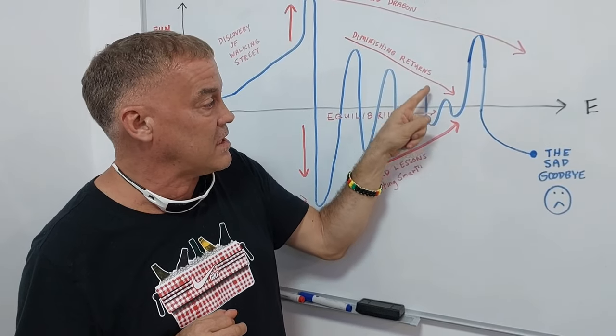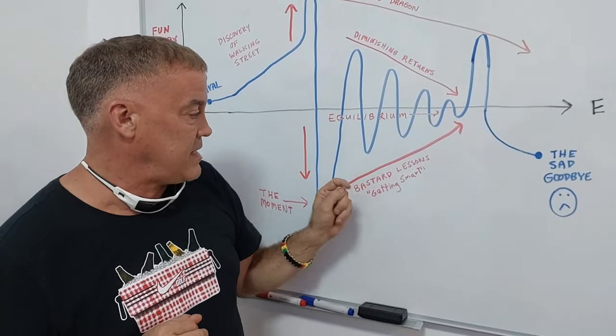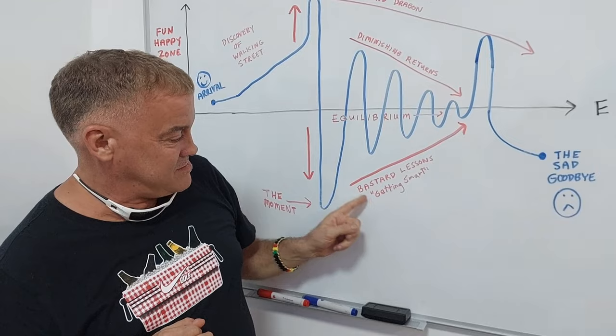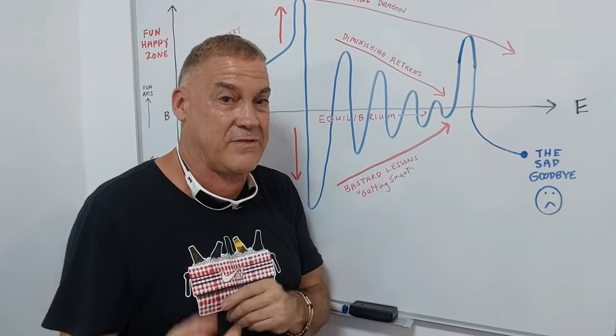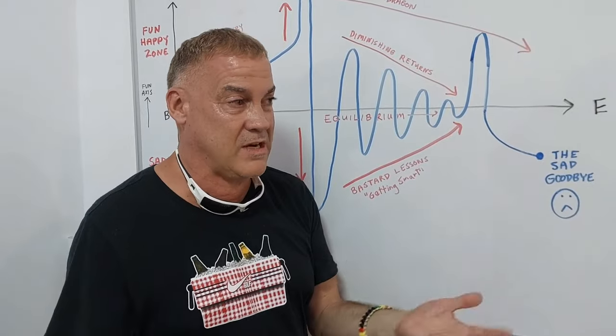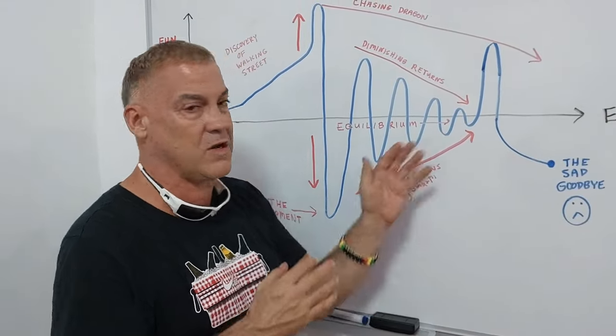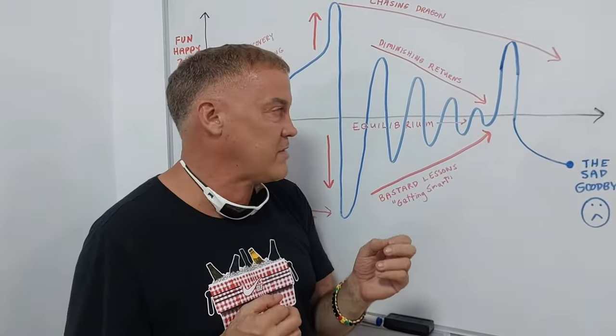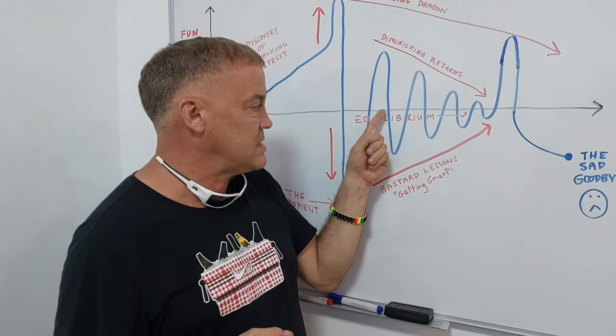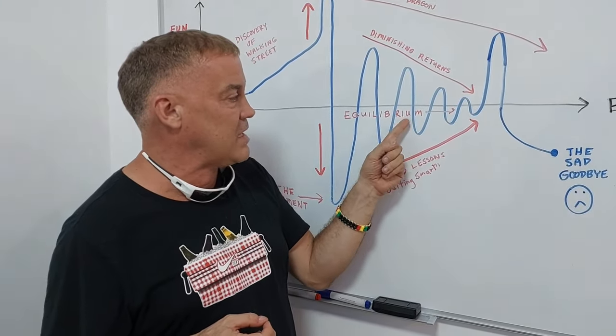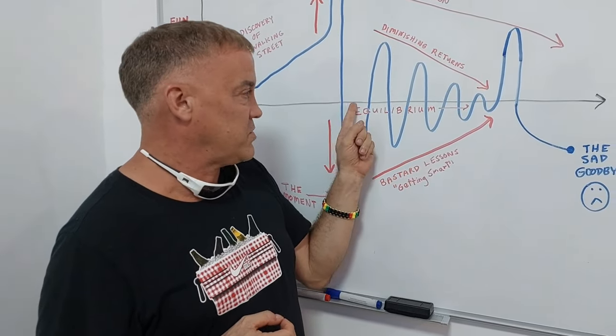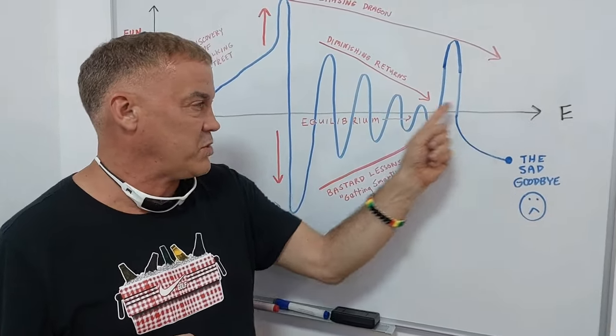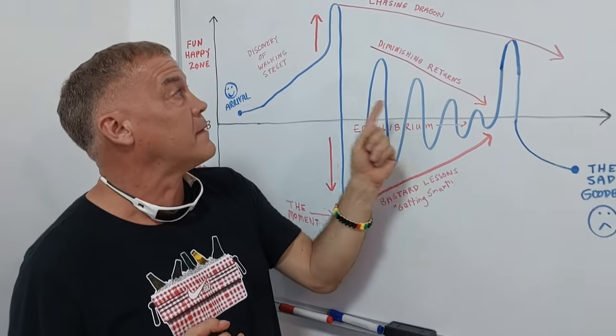Here you're getting smarter as you spend three days here, five days, one week, two weeks. You're here on holiday, vacation. You're getting smarter. You're learning stuff every day you go out, every night you go out. So this is getting better. Your equilibrium, you're trying to find that equilibrium.